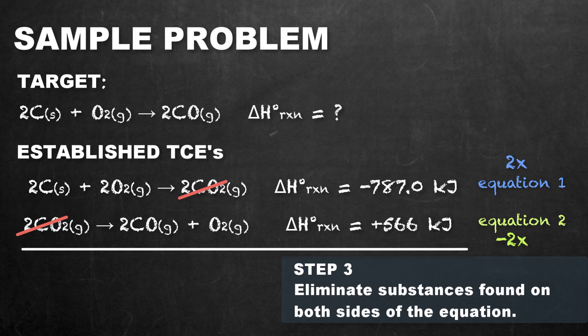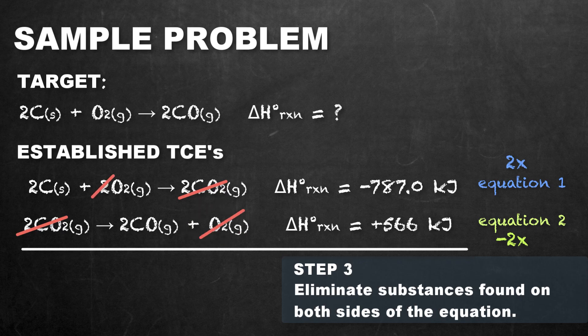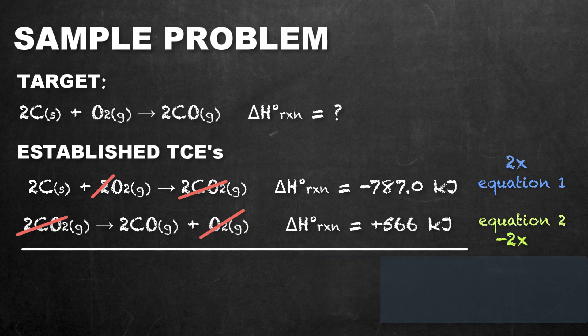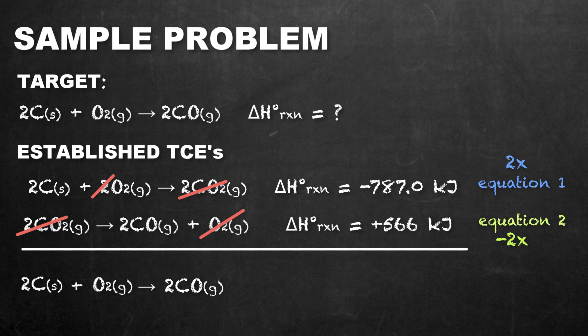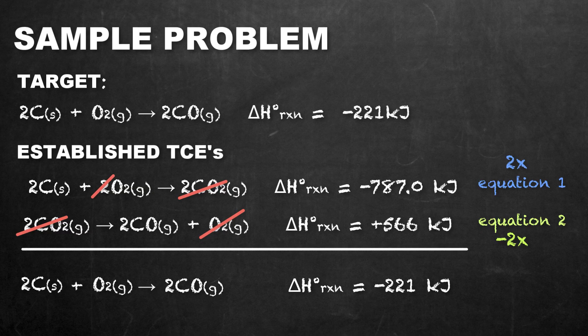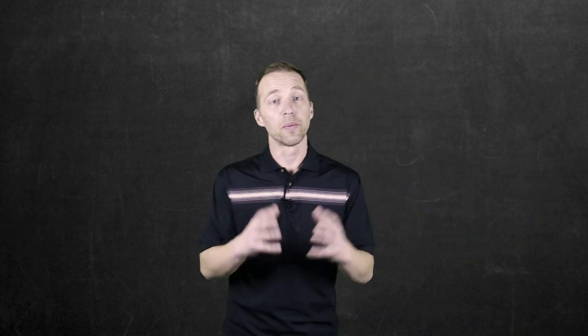Similarly, equation 2 has one mole of oxygen on the product side and equation 1 has two moles of oxygen on the reactant side, meaning one mole of oxygen didn't participate and can be cancelled out. After cancelling the carbon dioxide and the extra oxygen, the remaining species on both sides of the arrow give us the target equation.